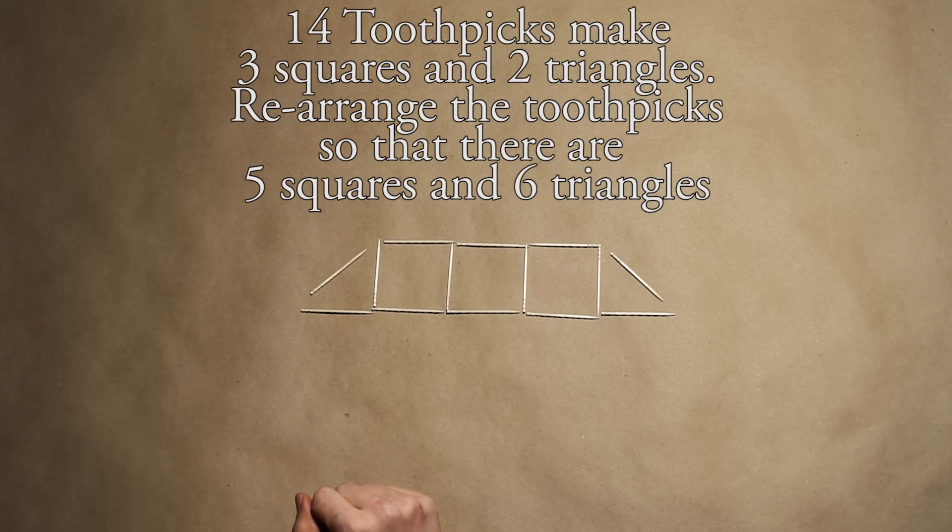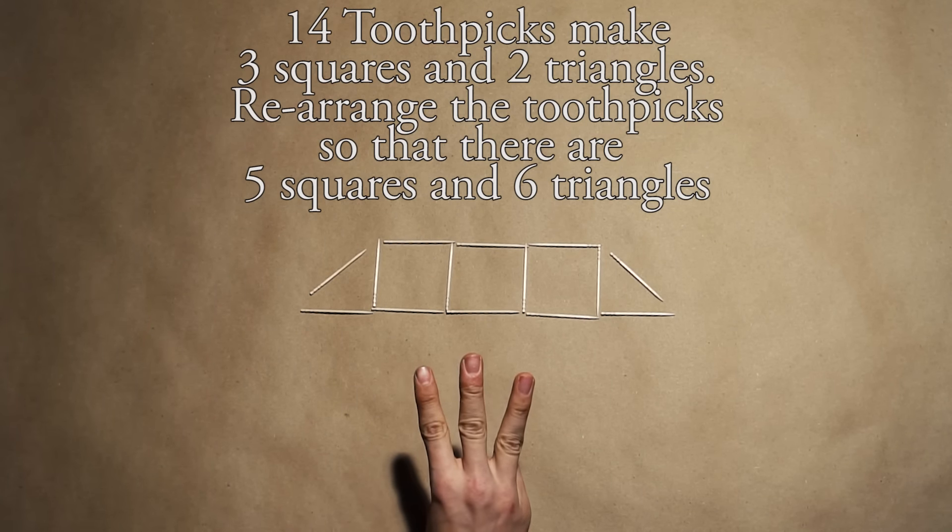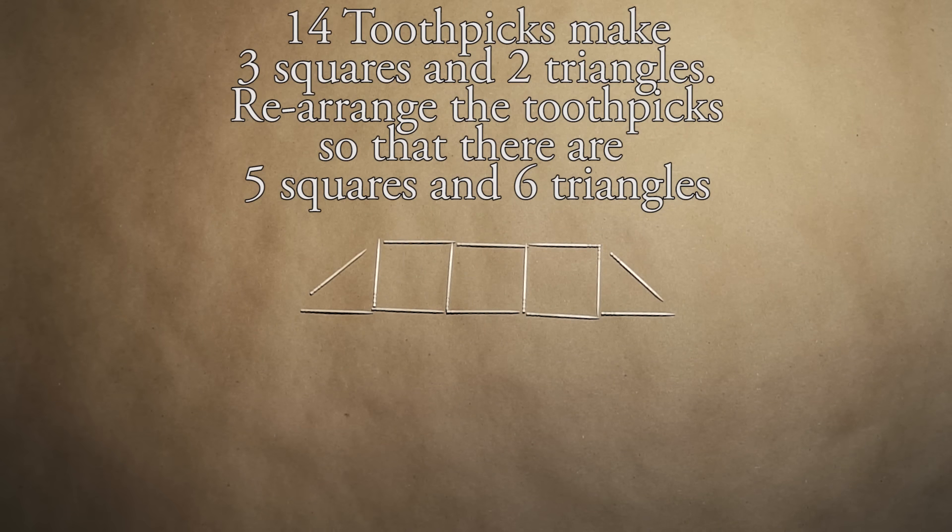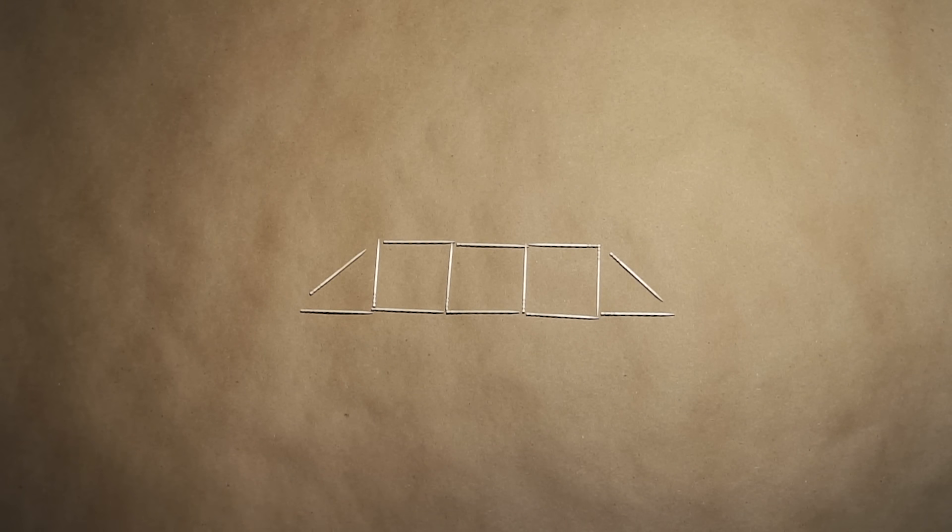And last up we got level three. This one we have three squares and two triangles. Your job is to make five squares and six triangles by rearranging these toothpicks. There is no limit, you can rearrange them however you'd like, but you need to make five squares and six triangles. So go ahead and pause the video and give it a shot. Good luck.